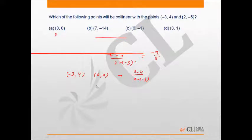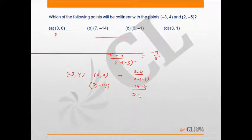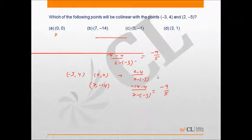Coming to the second option, the point is (7, -14). Here the slope will be (-14 - 4) upon (7 - (-3)), which is equal to -9/5. Therefore the point (7, -14) is collinear with the given two points and it will be our answer.